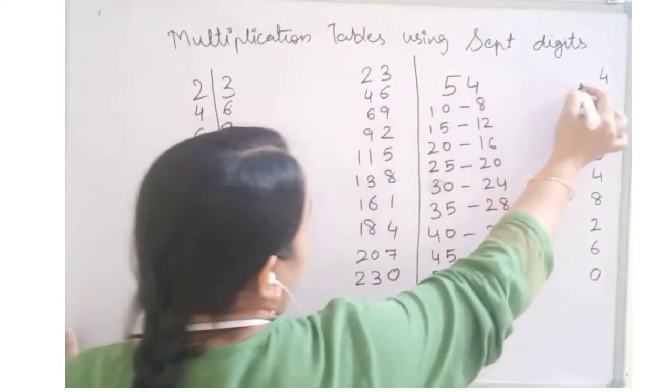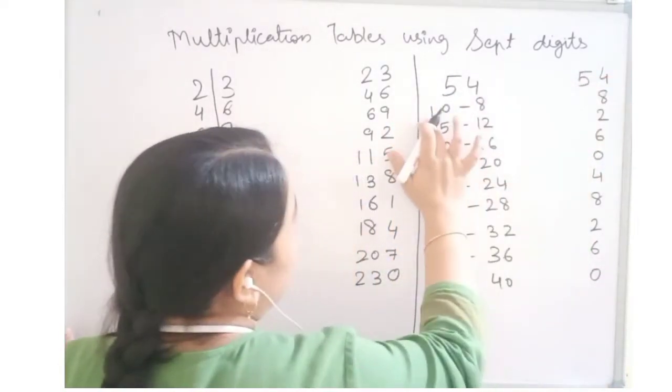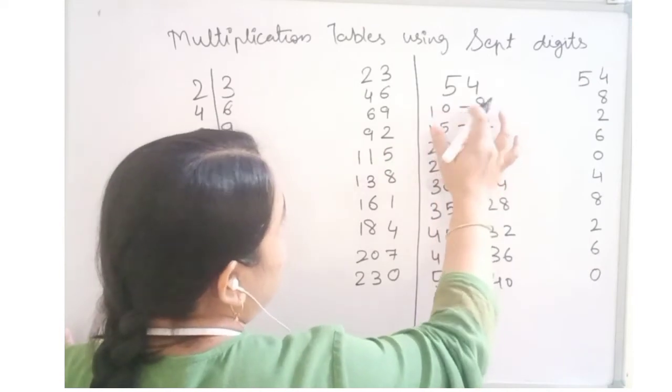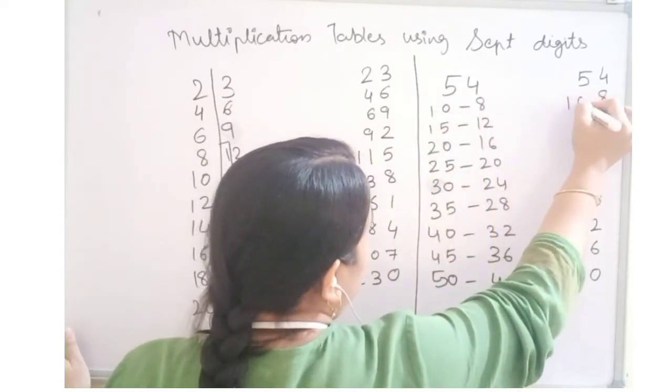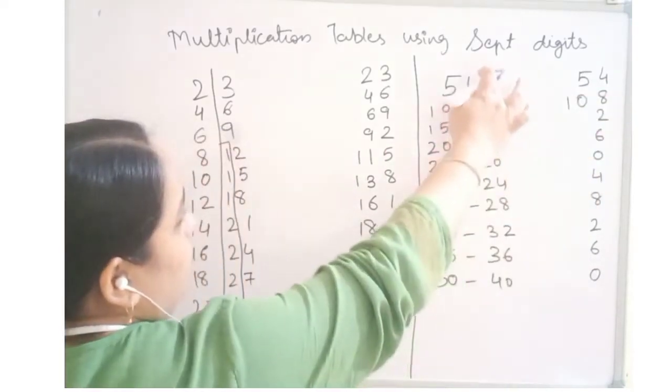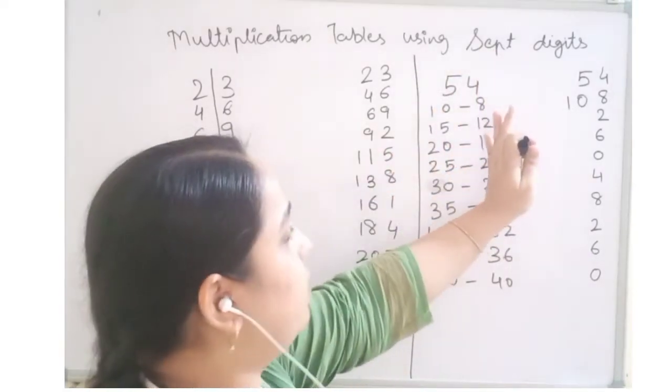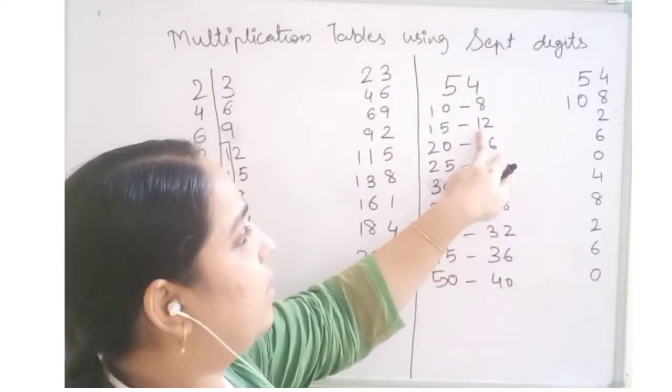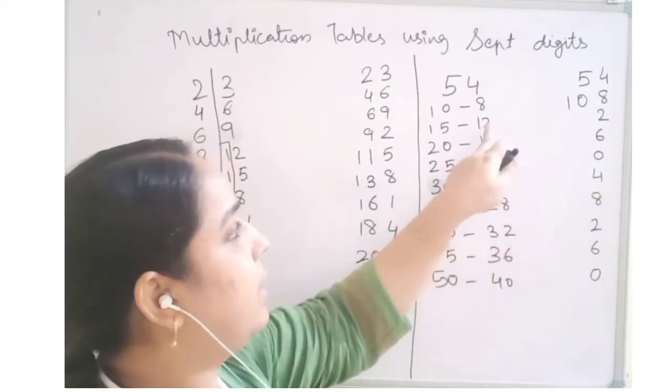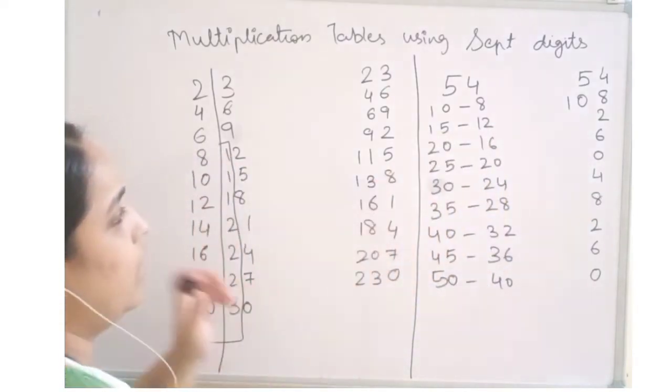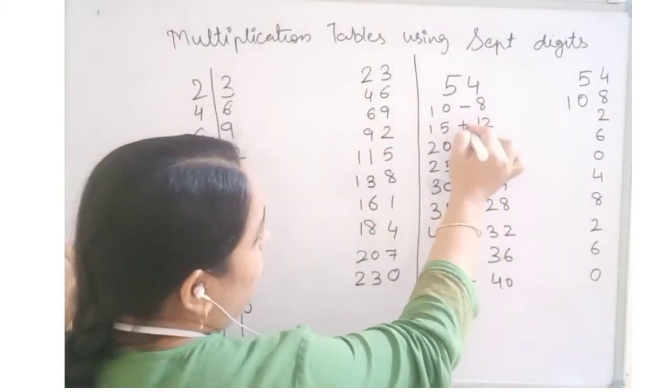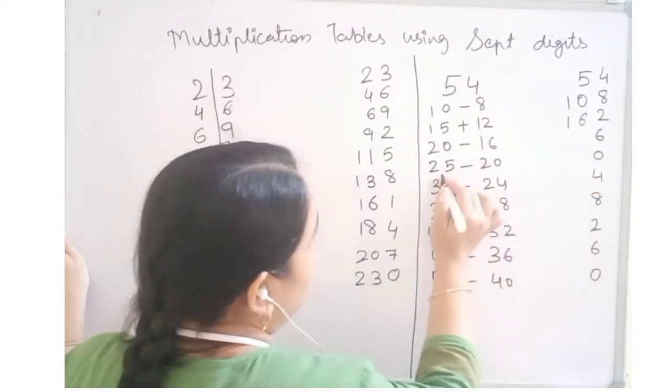Now single digit 5 as it is. This is 2 digit and this is single. So we will write as it is. If suppose we have this side, right hand side table, we have 2 digit, we will add. Right hand side as it is we will write. Left hand side we will add with the left hand side digit. So 15 plus 1 is 16.